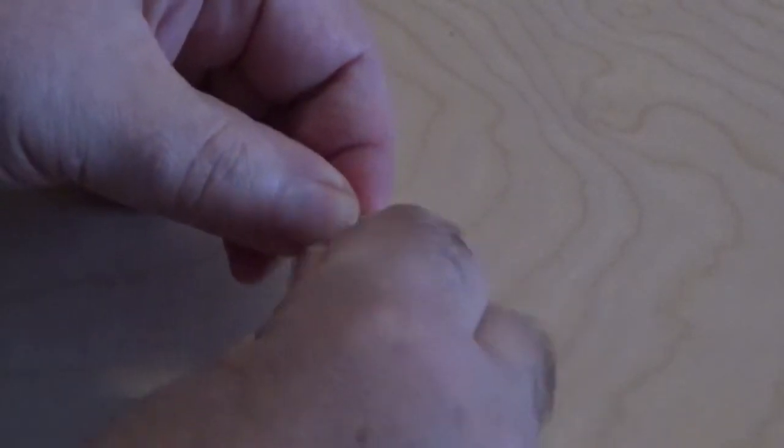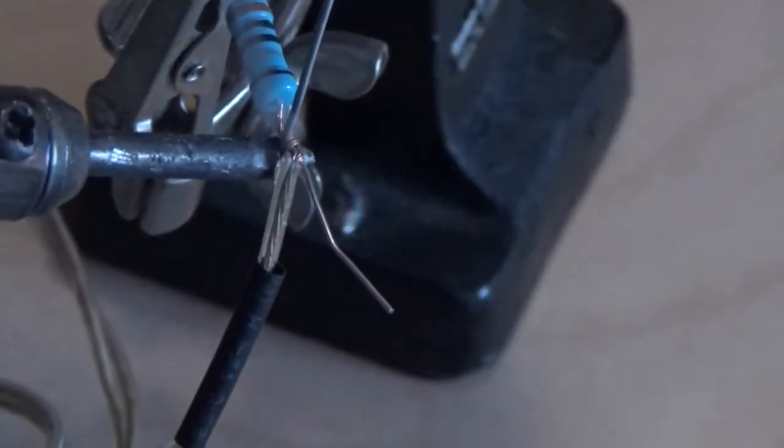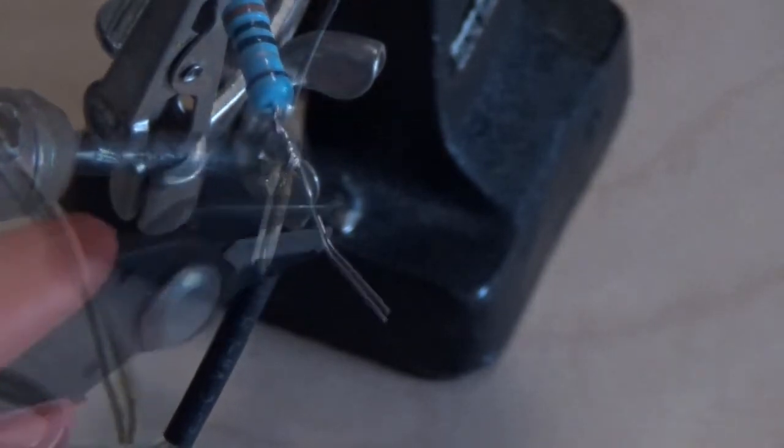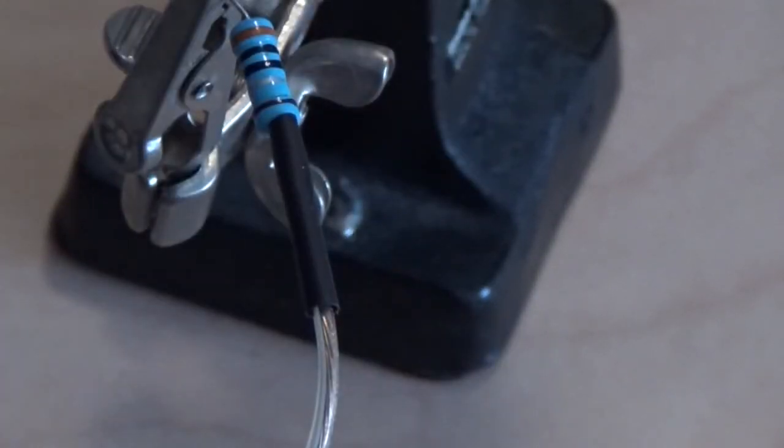Slide the tubing over the ends of the wires and solder one of these wires to the last resistor in the array. Clip off the excess wire, then slide the shrink tubing over the solder joint. Apply heat to the shrink tubing to fix it into place.